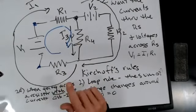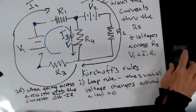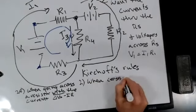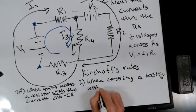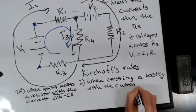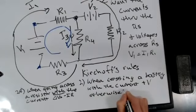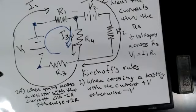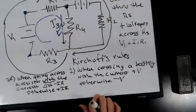So rule 2B: when going across a resistor, if you're going with the current you subtract IR; if you're going against the current you add plus IR.